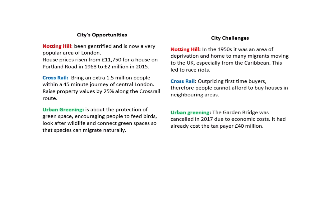Opportunities and challenges centre around three areas. Notting Hill has experienced gentrification — it's a popular area with massively risen house prices — but in the 1950s it was a centre of deprivation with huge race riots. Crossrail brings an extra 1.5 million people within a 45-minute journey of London, but it's outpricing first-time buyers. Urban greening protects green space with huge benefits for wildlife, but the Garden Bridge strategy launched in 2017 was cancelled due to economic costs — by which point taxpayers had already spent £40 million on it.